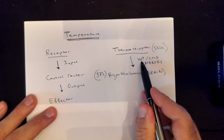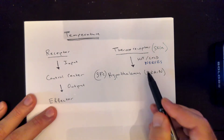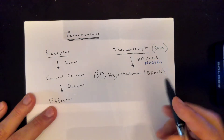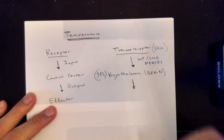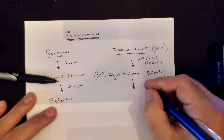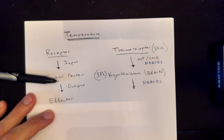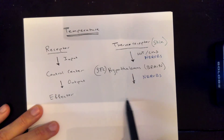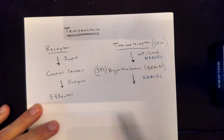If it's too hot, the hypothalamus says we need to bring it back down to 37. If it's too cold, it says we need to bring it back up to 37. So now it has to send the output, again via nerves, to the effectors. There can be more than one effector — it's not always just one.